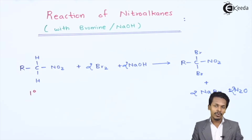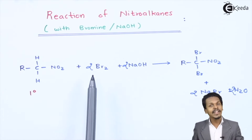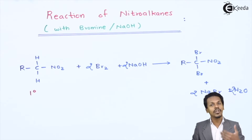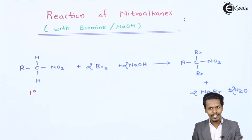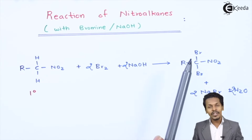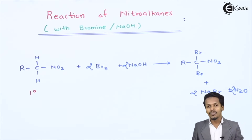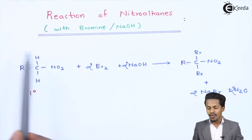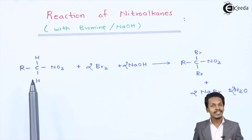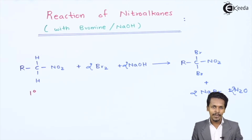The main point is: whenever a primary nitroalkane is reacted with a halogen — Br2 or Cl2 — in the presence of NaOH, the product is a dihalogen derivative of the primary nitroalkane. Let me now explain this with the help of an example.